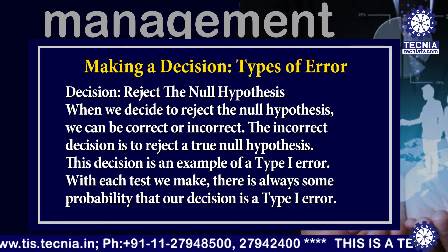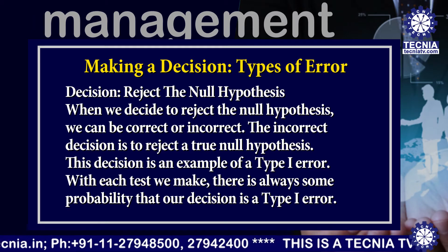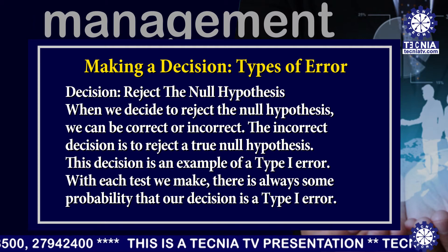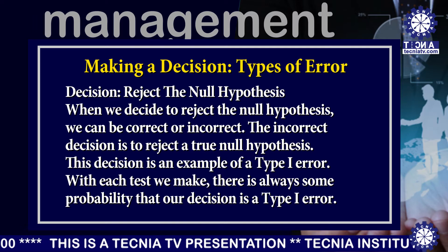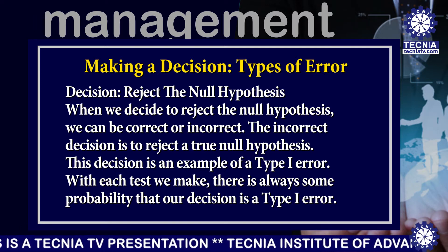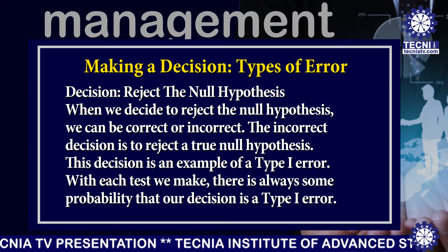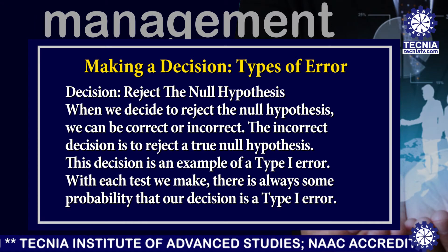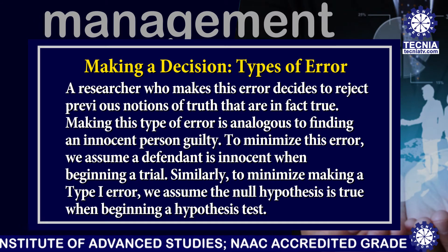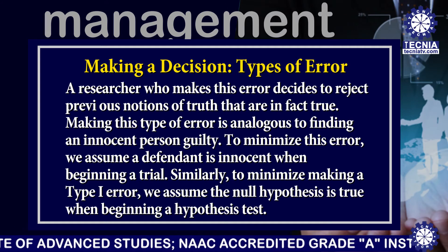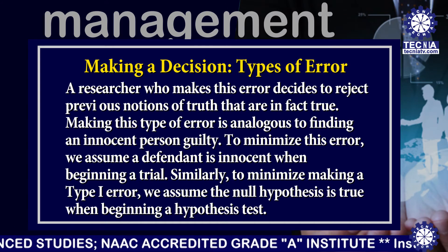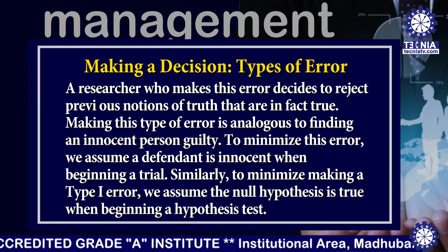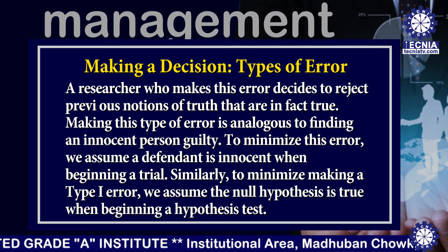The second decision concerns rejecting the null hypothesis. When we decide to reject the null hypothesis, we can be correct or incorrect. The incorrect decision is to reject a null hypothesis that is actually true. This decision is an example of a Type 1 error. With each test we make, there is always a Type 1 error risk. A researcher who makes this error decides to reject previous notions of truth that are in fact true. Making this error is analogous to finding an innocent person guilty.